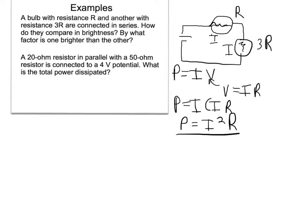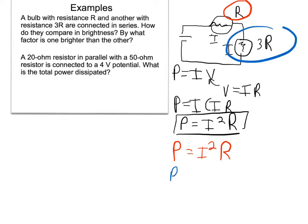Just as many electrons will pass through both every second. So if their currents are the same, their resistance is what matters for their power. Working through the equation: the R bulb has P equals I squared times R, and the 3R bulb has P equals I squared times 3R. That second equation is clearly three times bigger than the first, so the 3R bulb is three times brighter.